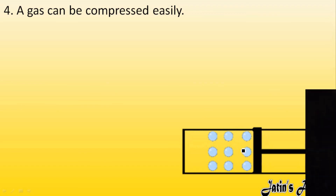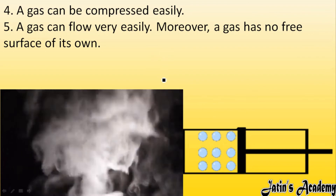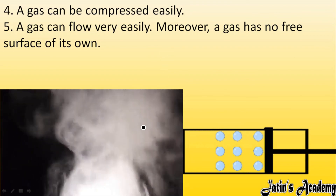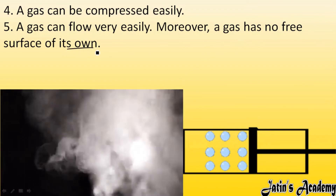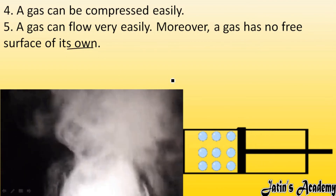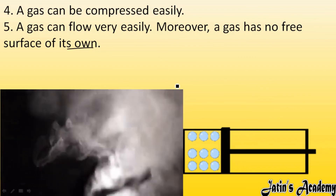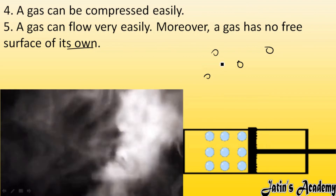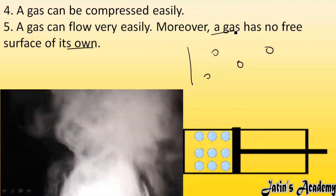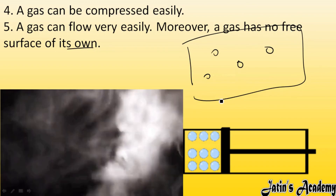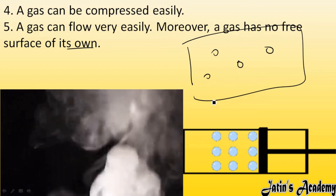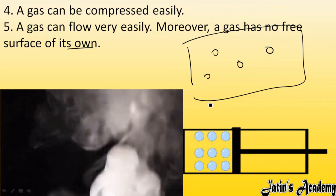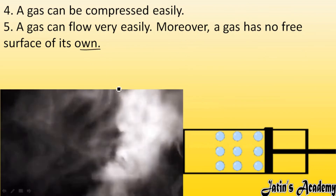A gas can flow easily — for example, smoke particles are moving freely. Moreover, a gas has no free surface of its own. In gas particles, no two media are going to separate, because all particles present are gas particles — there are no different mediums. Therefore, there is no separation, meaning gases do not have any kind of free surface.